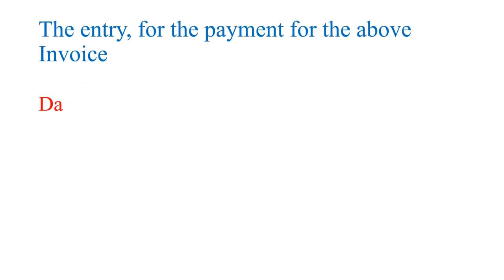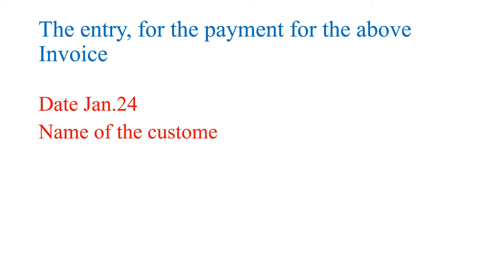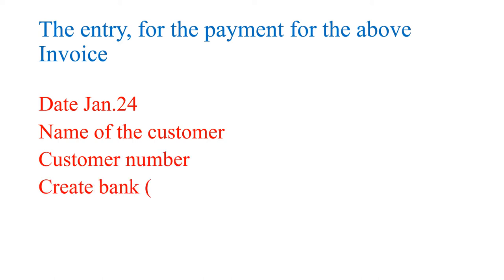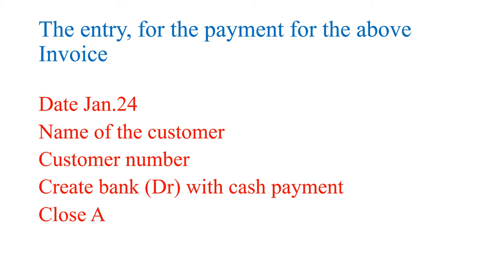After 30 days, the customer comes back with the money and pays for the goods. So how do you record the cash receipt? You record the date on the cash receipt journal along with the name of the customer and customer number.